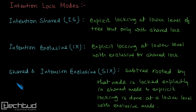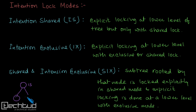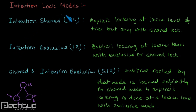The first is Intention Shared (IS). If there is an intention shared lock on a node, it means that at a lower level, explicit locking is done with a shared lock. So if a node has an intention shared lock, it means that at lower levels of this node we have shared locking applied explicitly.